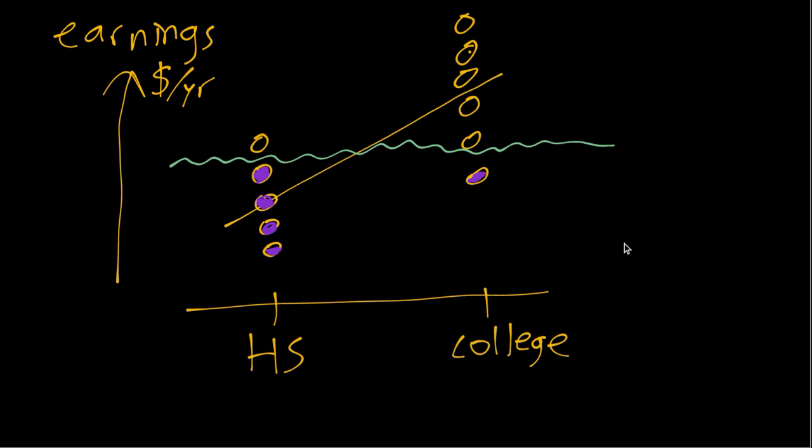So if we only have the purple dots and we run OLS, as you can see, we'll get something more like that. So we can see there's a lot of bias in this case from the missing data because the reason it was missing is related to the Y value itself.